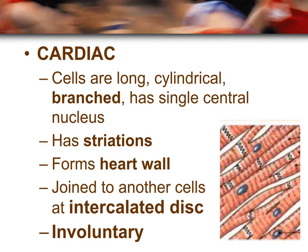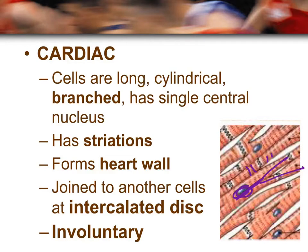Cardiac muscles are similar to skeletal muscle in that they are long and cylindrical. But the difference is that cardiac muscles branch — they start off as one cylindrical long cell and branch off into two. They have a centrally located single nucleus, unlike skeletal muscle which is multinucleated. Like skeletal muscle, they have striations. The cardiac muscle forms the heart wall, involved in pumping blood, and is joined to other cells via intercalated discs, which are the slightly darker bands.